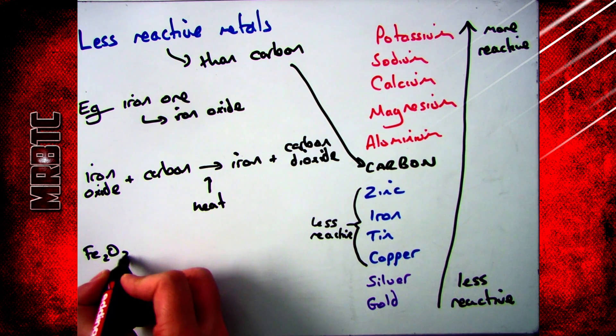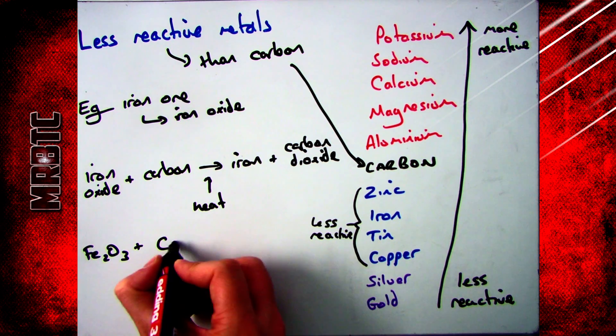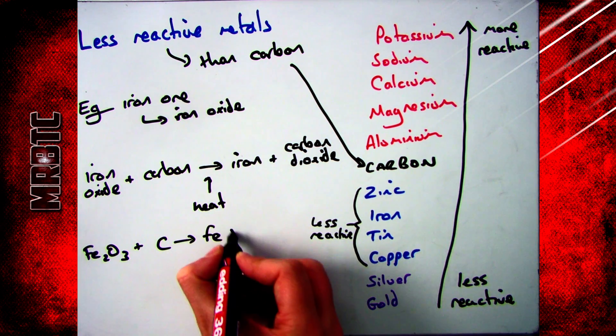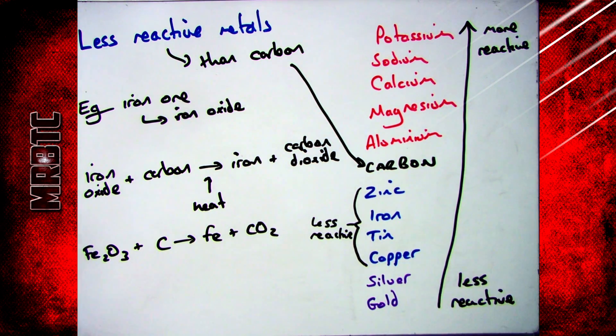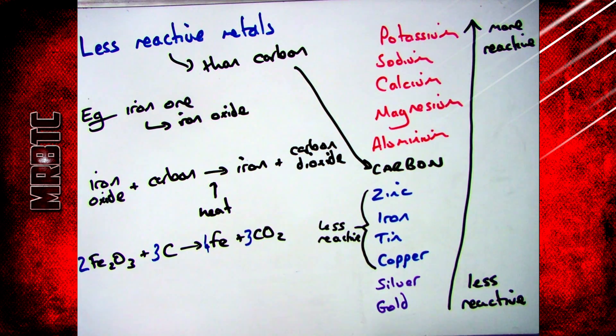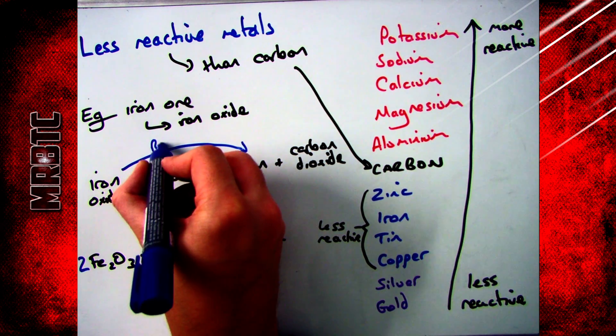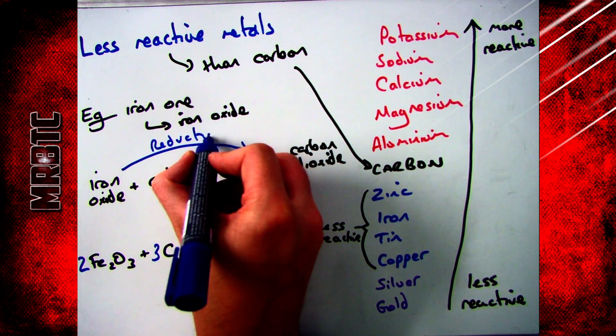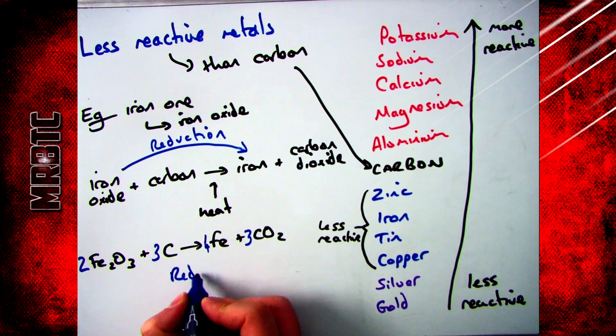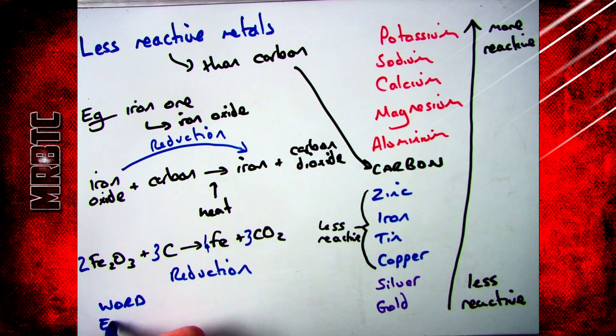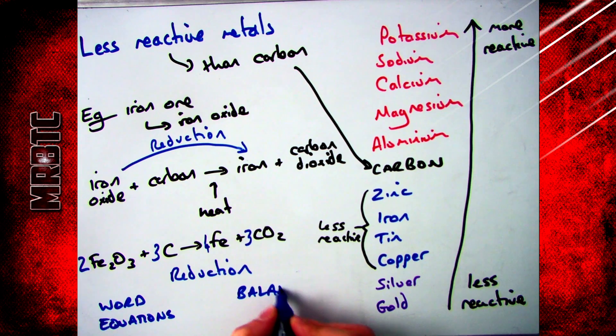If you were to do the symbol equation for it, it's Fe2O3 plus C goes to Fe plus CO2, which you then need to balance. If you're wondering how I got these word equations, there is a link at the bottom of the screen which will show you how to write the word equations for these reduction reactions, as well as how to do the balanced chemical equations. Have a click on both of them and that should fill you in on what you need to know.